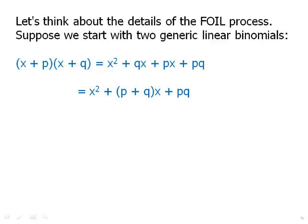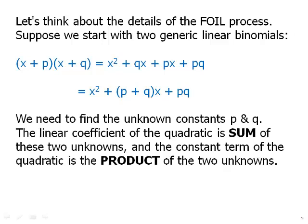Imagine we look at our quadratic trinomial. That linear coefficient is p + q, and that constant term is p times q. In other words, the linear coefficient of the quadratic is the sum of the two unknowns we're looking for, and the constant term of the quadratic is the product of the two unknowns. Very interesting.